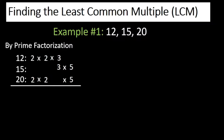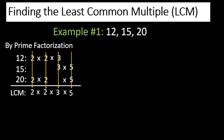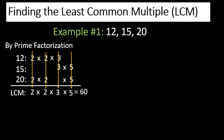The next thing you need to do is simply bring down these prime factors. So we have 2 times 2 times 3 times 5. And 2 times 2 is 4, times 3 is 12, times 5 is 60. Therefore the least common multiple of 12, 15, and 20 is 60.